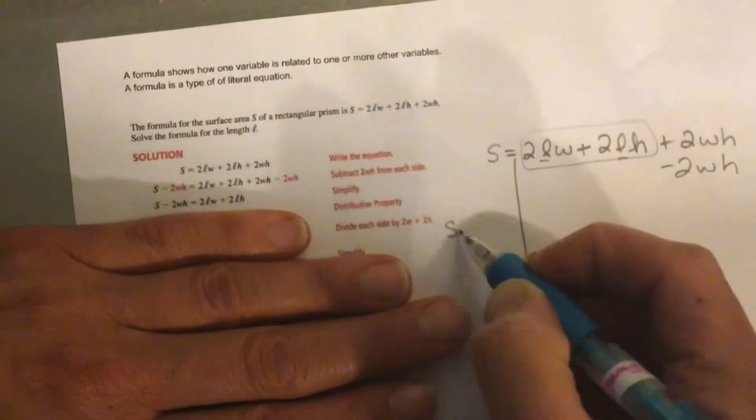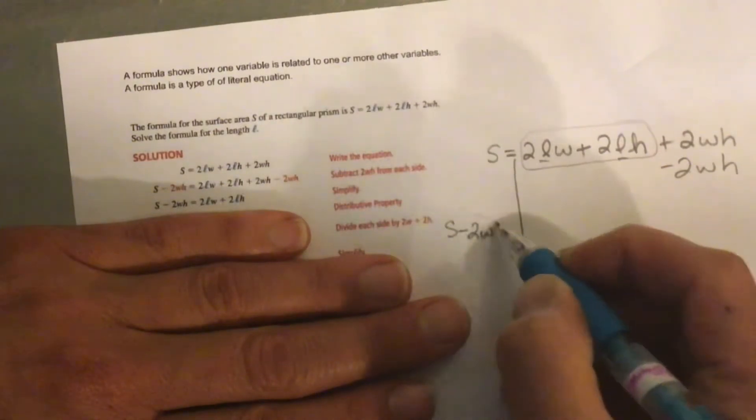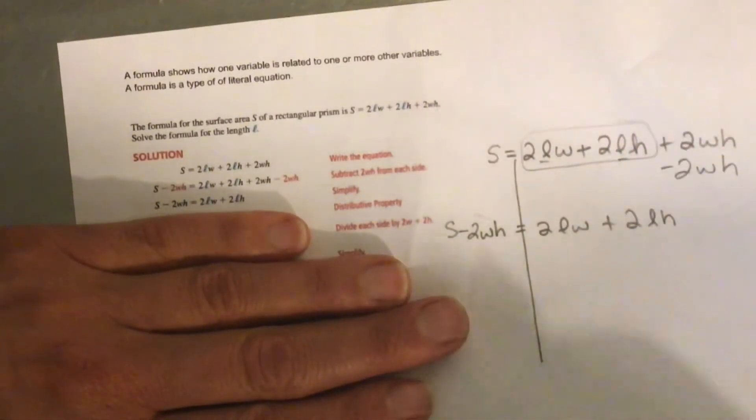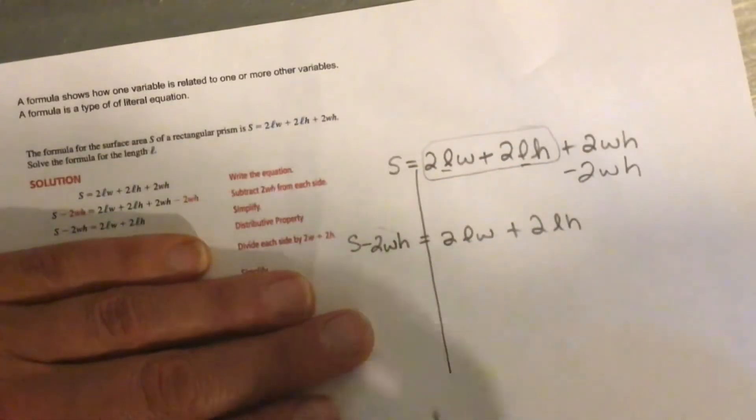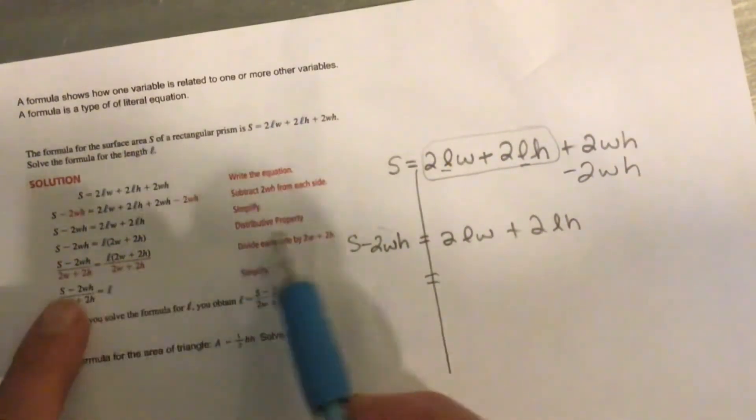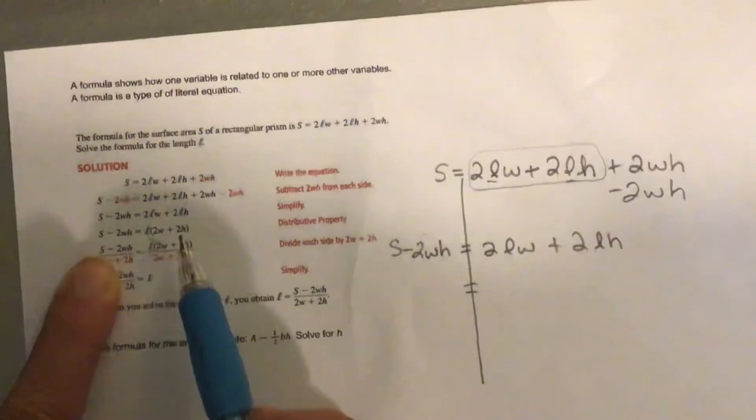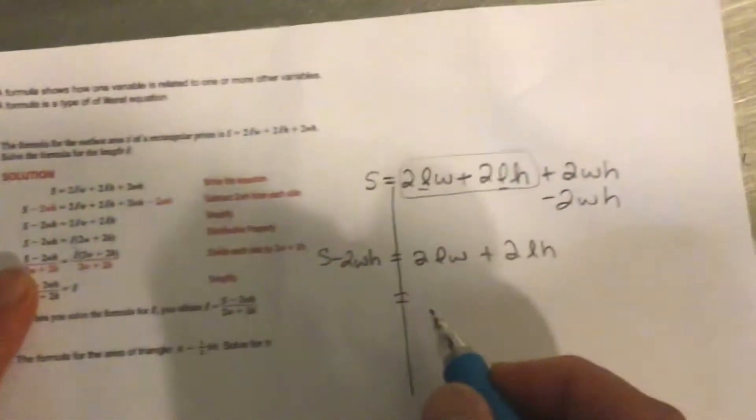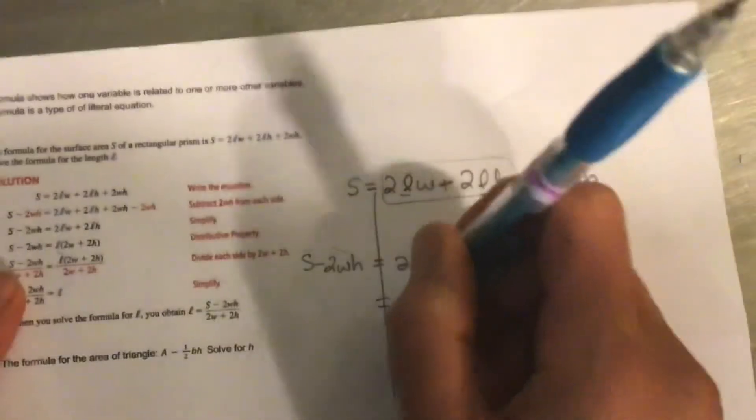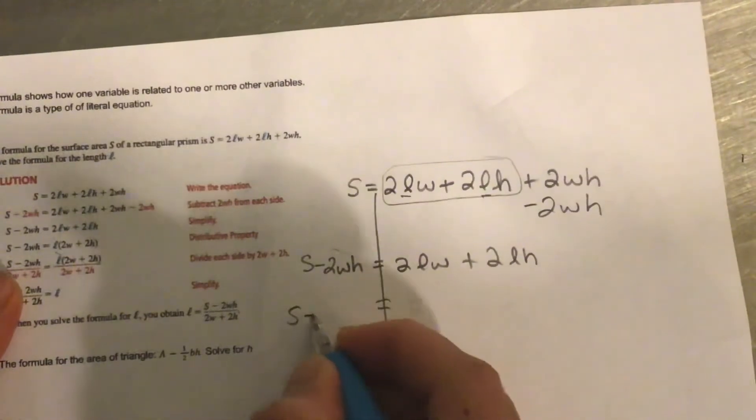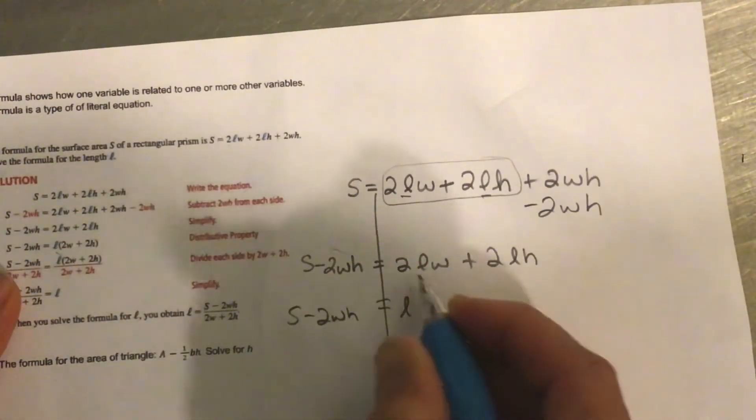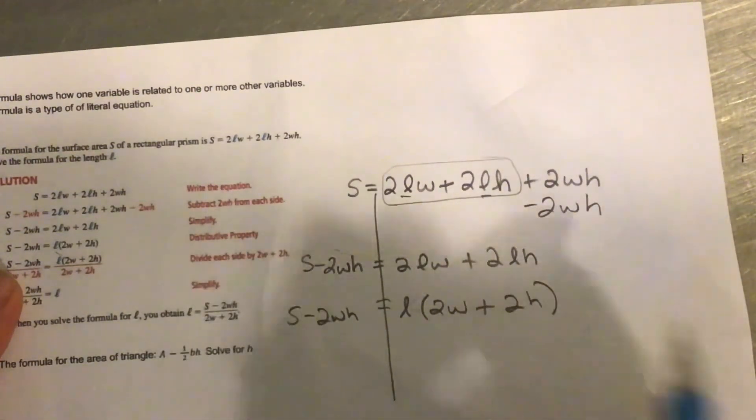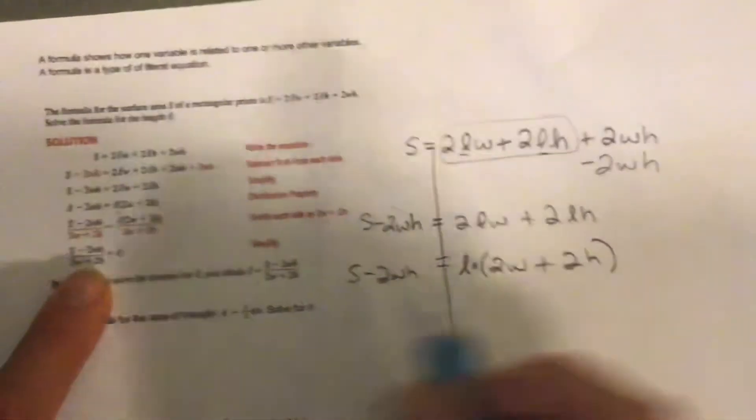And then you've got S minus 2WH equals 2LW plus 2LH. Now you're going to use the distributive property. And so a distributive property. Pull out the L from those two terms on the right. They both have an L. So if I pull out the L, not changing this side. Pull out the L. If I take out the L, I've got 2W left. If I take out the L, I've got 2H left. You can distribute and make sure you get the same thing back.